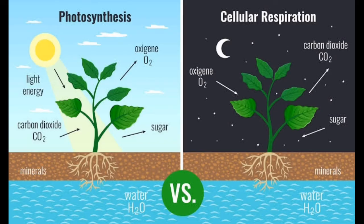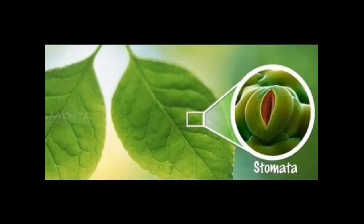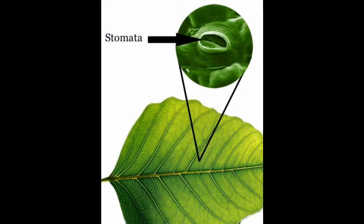The next topic is respiration in plants. Like animals, plants also take oxygen from the atmosphere and release carbon dioxide. The surface of leaves has innumerable small pores called stomata. Generally, the lower surface of the leaf has more stomata compared to the upper surface. Exchange of oxygen, carbon dioxide, and water vapor takes place through the stomata — they are the small pores through which this exchange of gases takes place.